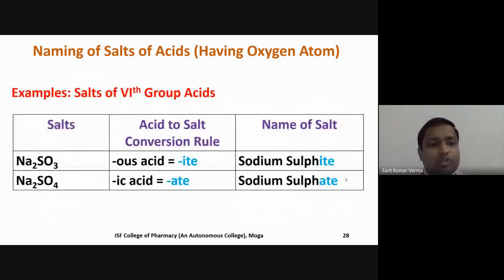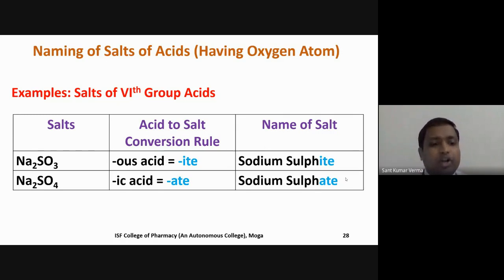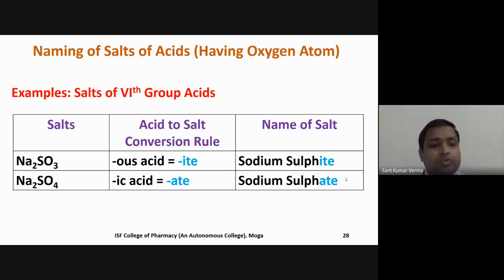For Group 6 salts: Na₂SO₃ — the corresponding acid is H₂SO₃, sulfurous acid ('-ous'). The salt name will end in '-ite': sodium sulfite. Na₂SO₄ — the corresponding acid is H₂SO₄, sulfuric acid ('-ic'). The salt name ends in '-ate': sodium sulfate.